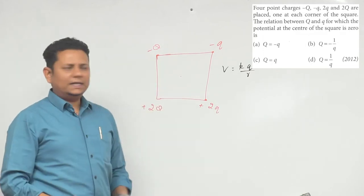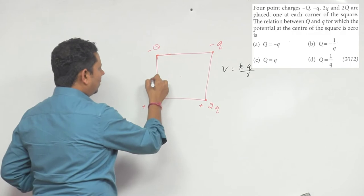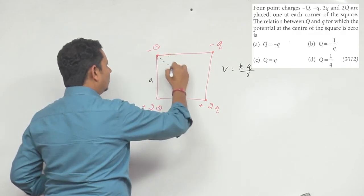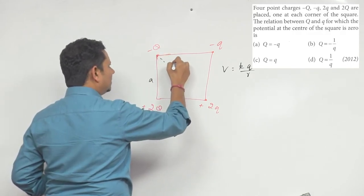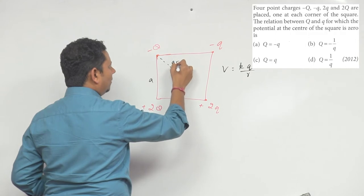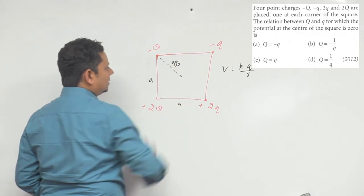This point is where we need the potential. If you have a square with side A, then the distance from the corner to the center is A by root 2. This point is the potential.